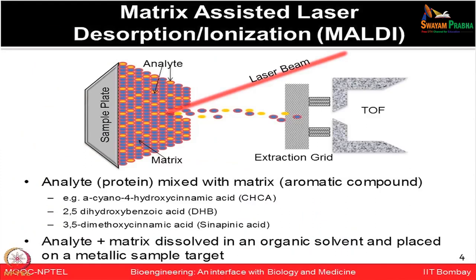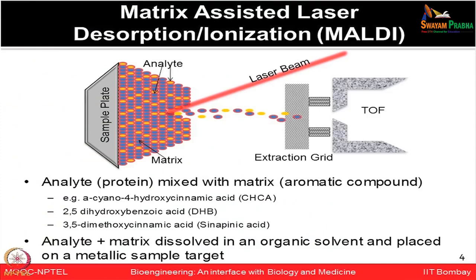In MALDI, there is a target plate with a dried matrix and protein sample which is exposed to a short, intense pulse of laser light, generating ionized forms of these peptides for analysis in mass analyzers. The analyte or protein of interest is mixed with a matrix, which could be an aromatic compound such as alpha-cyano-4-hydroxycinnamic acid, 2,5-dihydroxybenzoic acid (DHB), or cinnamic acid. The analyte and matrix are dissolved in organic solvents, crystallized, and placed on a metallic sample target plate for laser bombardment, and the resulting ions are separated by mass-to-charge ratio in a time-of-flight tube.